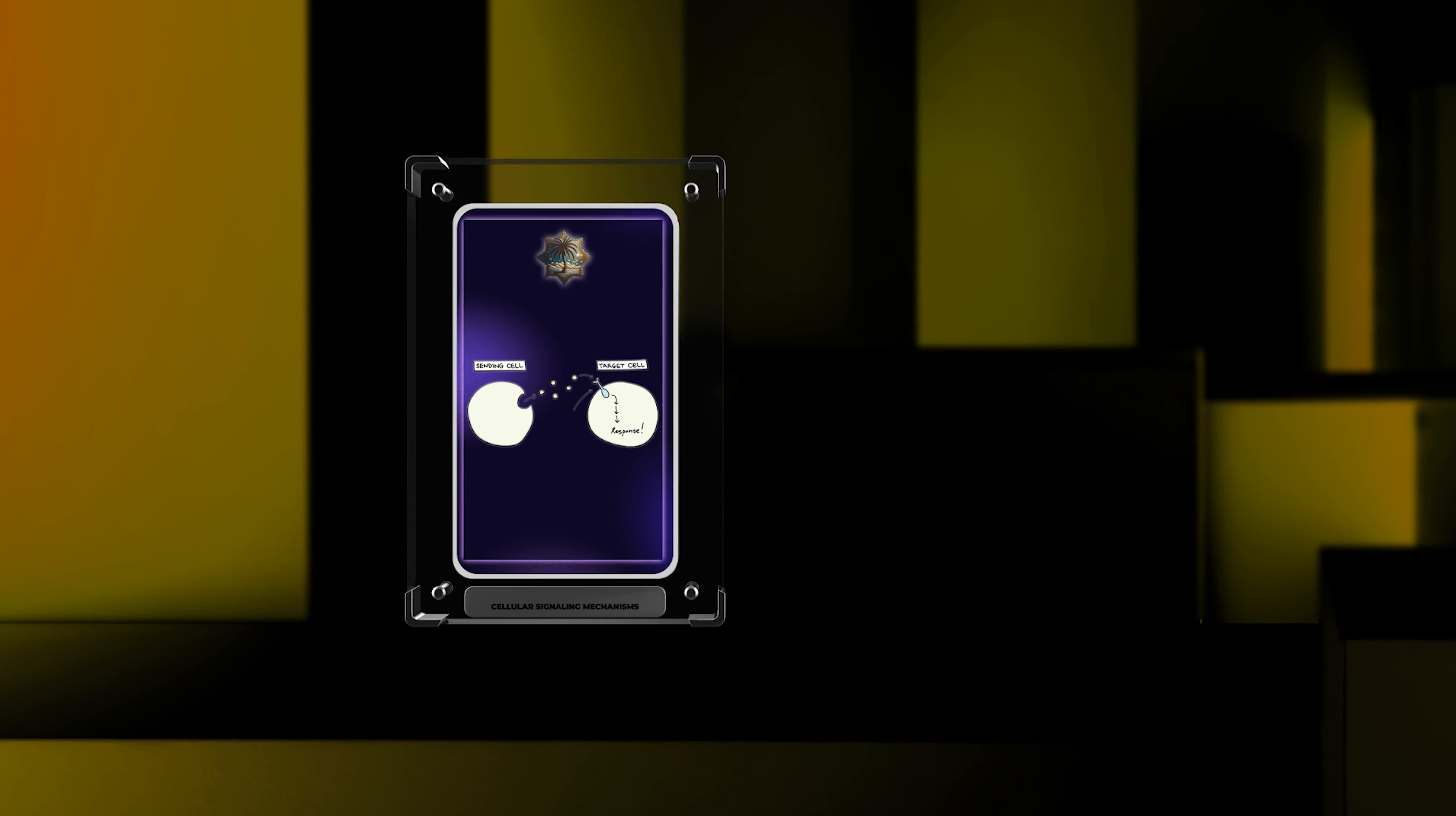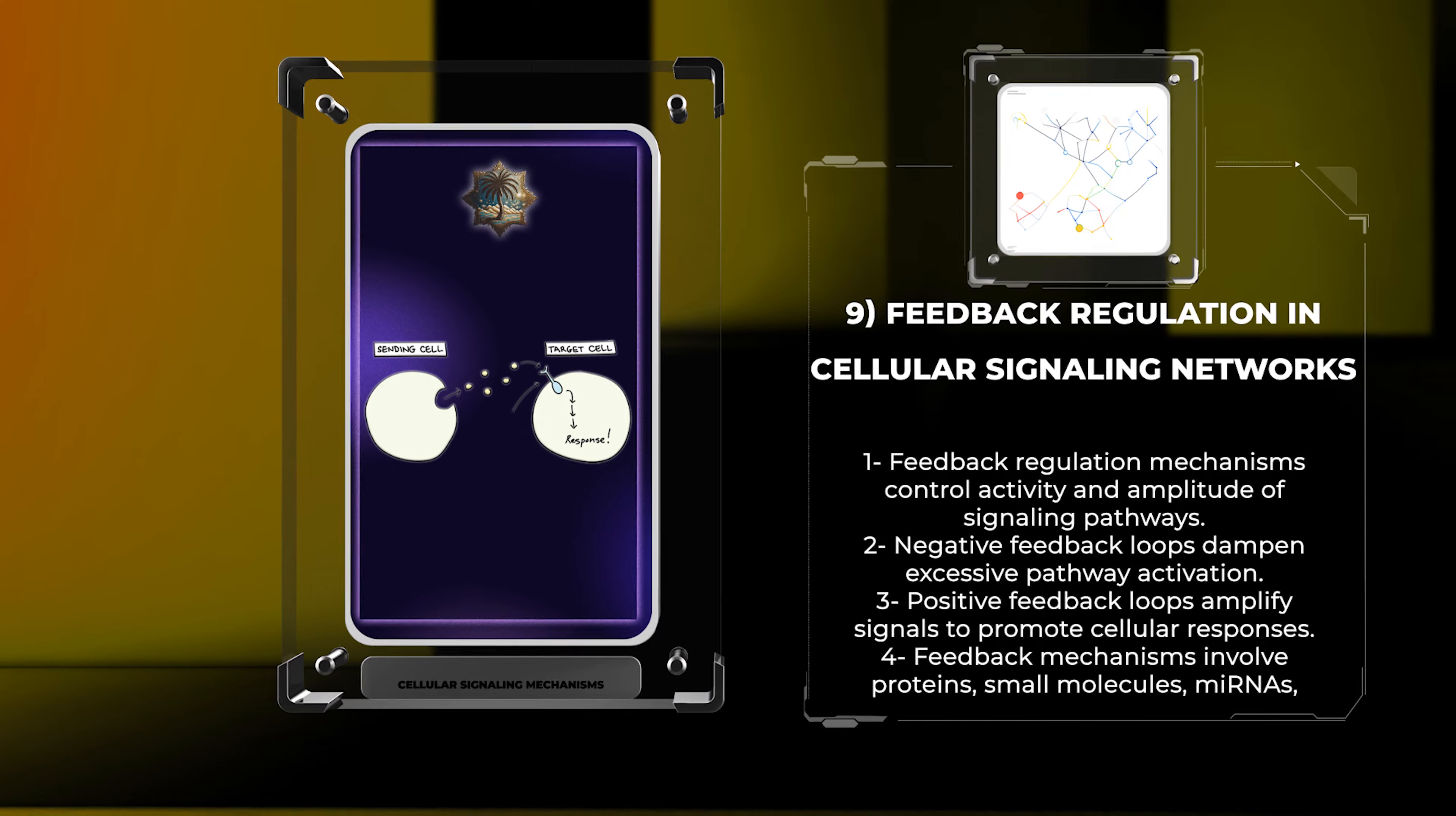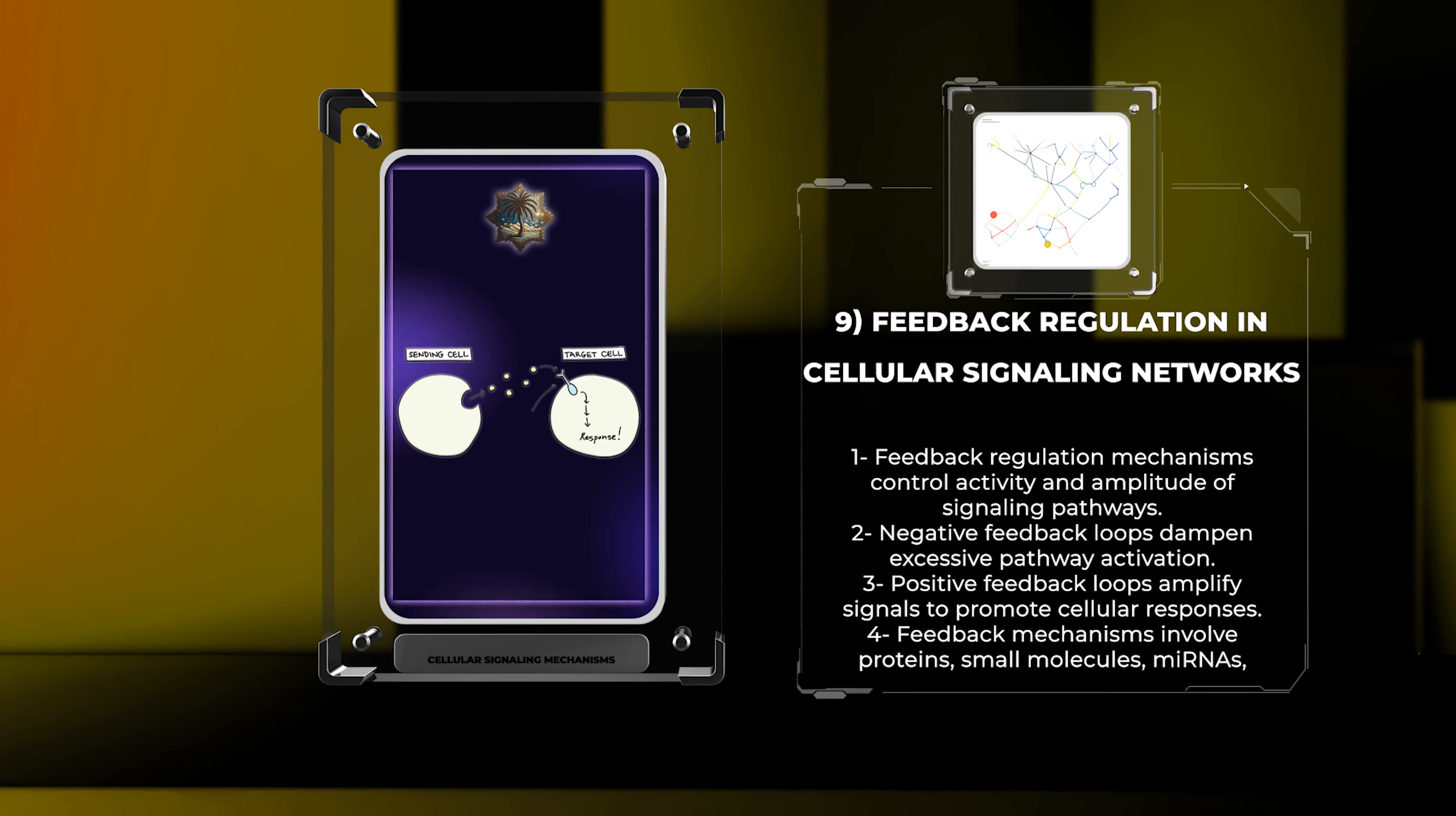Feedback regulation mechanisms tightly control the activity and amplitude of signaling pathways. Negative feedback loops help maintain homeostasis by dampening excessive pathway activation, while positive feedback loops amplify signals to promote cellular responses. These feedback mechanisms involve proteins, small molecules, miRNAs, and other regulators that fine-tune signaling dynamics and ensure appropriate cellular responses in different contexts.